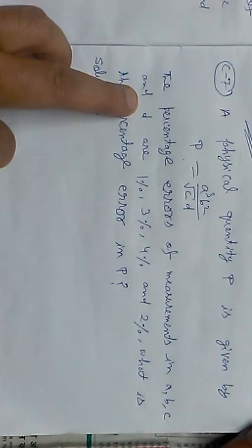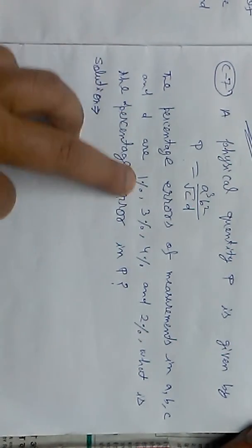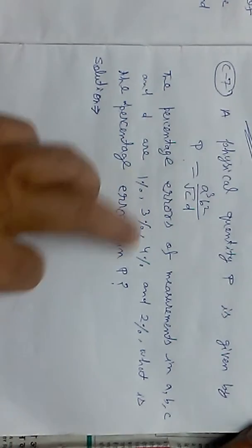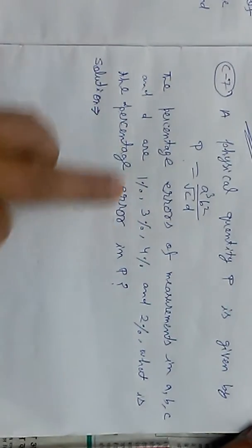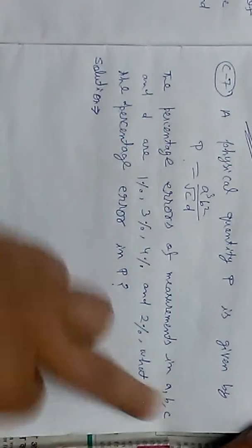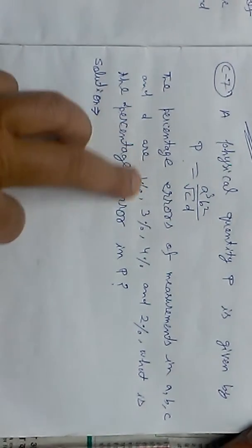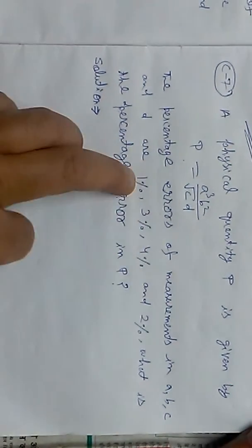The percentage errors in a, b, c, and d are 1%, 3%, 4%, and 2% respectively. What is the percentage error in P?